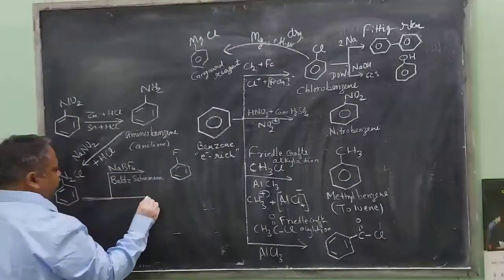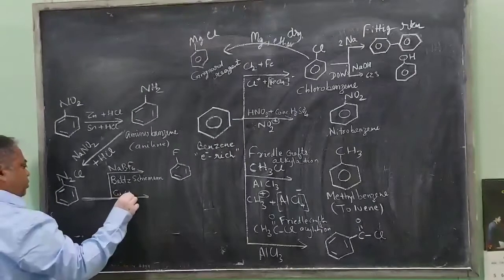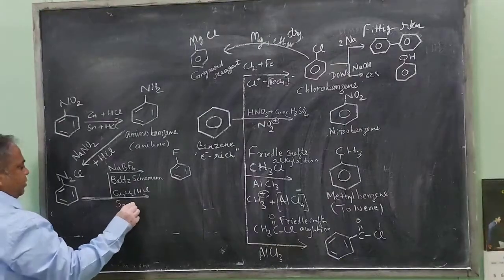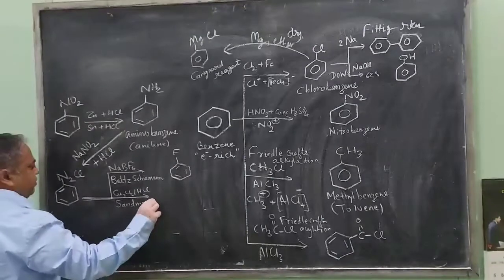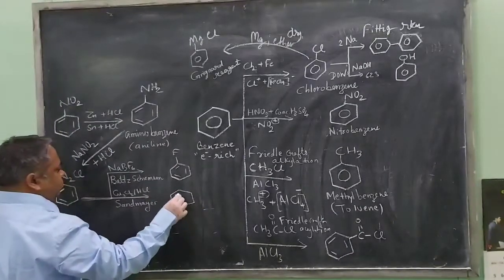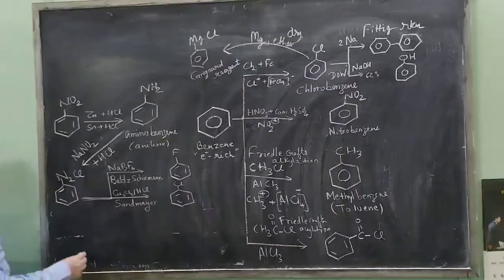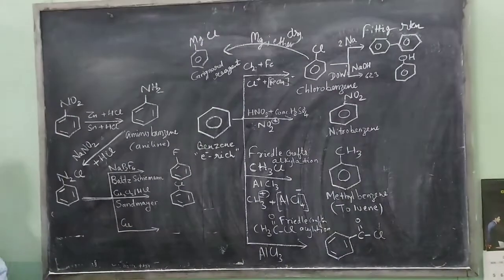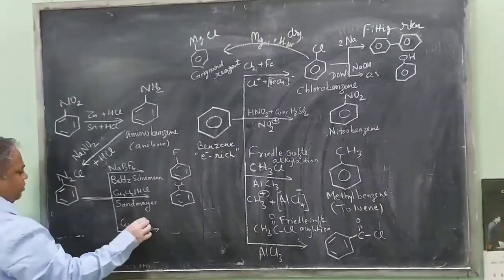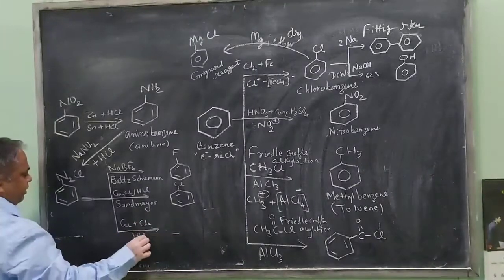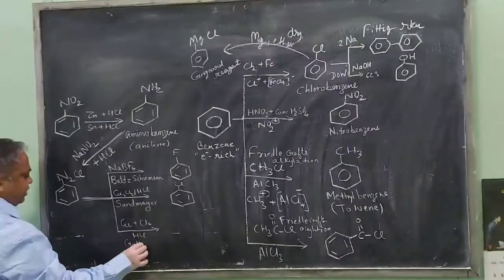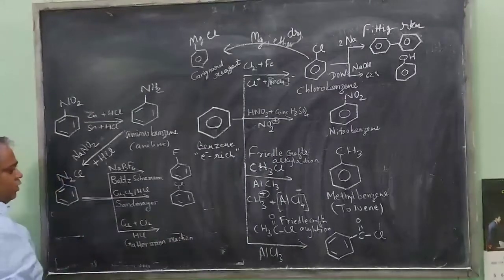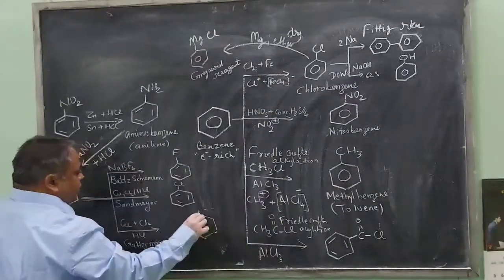If you treat this with Cu2Cl2 plus HCl, it undergoes Sandmeyer reaction and we form chlorobenzene. If you treat this with Cu plus Cl2 separately and HCl, then this case is called Gatterman reaction. This will also form chlorobenzene.